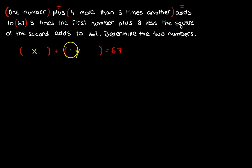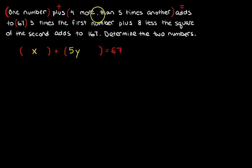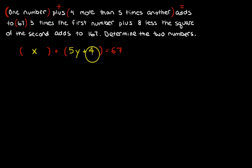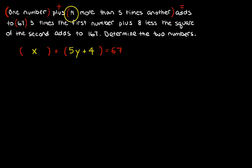It's five times another — that's 5Y. Four more than — so I add four, giving 5Y + 4. Notice how I started from the end and went backwards. Now I've got to do the next line: three times the first number.